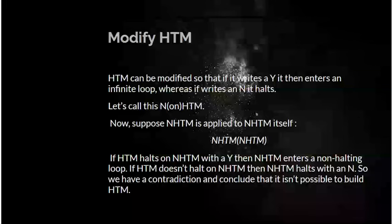What this means is that if HTM would have halted on NHTM with a Y, then NHTM must enter a non-halting loop, infinite loop. On the other hand, if HTM doesn't halt on NHTM, then NHTM halts with an N. So this is a contradiction. We have to conclude that no such program as HTM could possibly exist. When people talk about an uncomputable function, it doesn't mean you can actually write the uncomputable function. What Turing is saying is the uncomputable functions can't even be written.